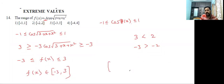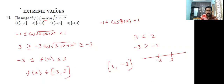Don't write it as [3, minus 3] — on the number line, minus 3 comes before plus 3, so the correct range is [-3, 3]. The third option is correct.